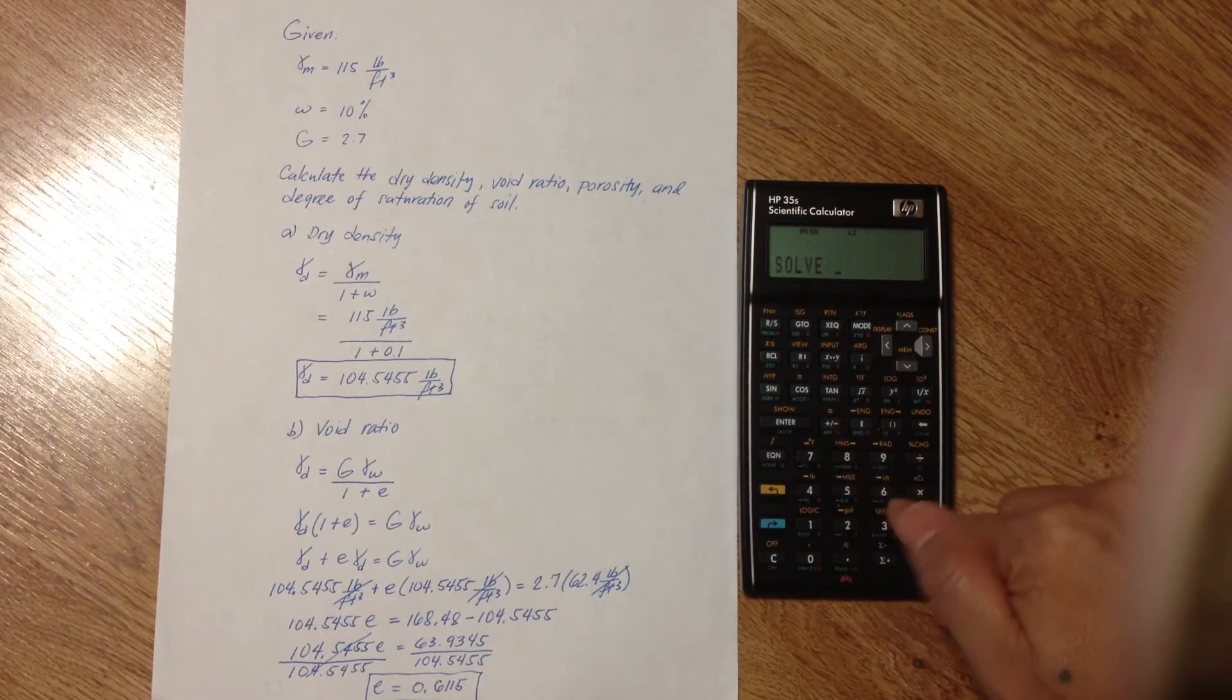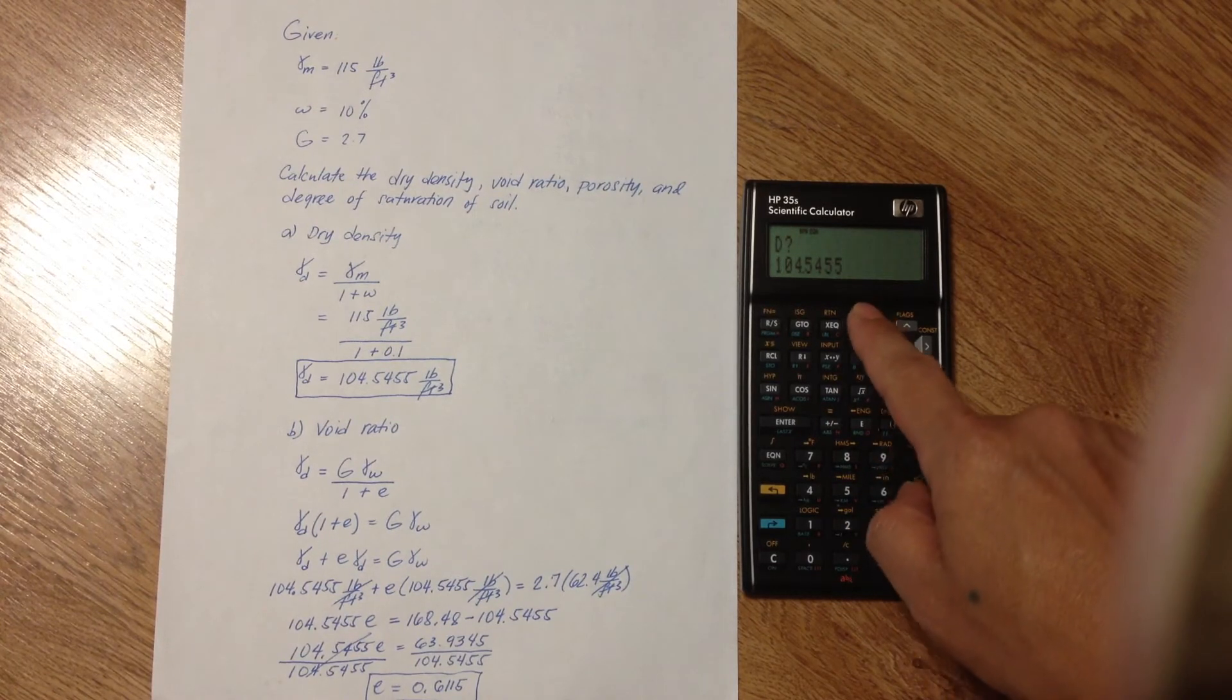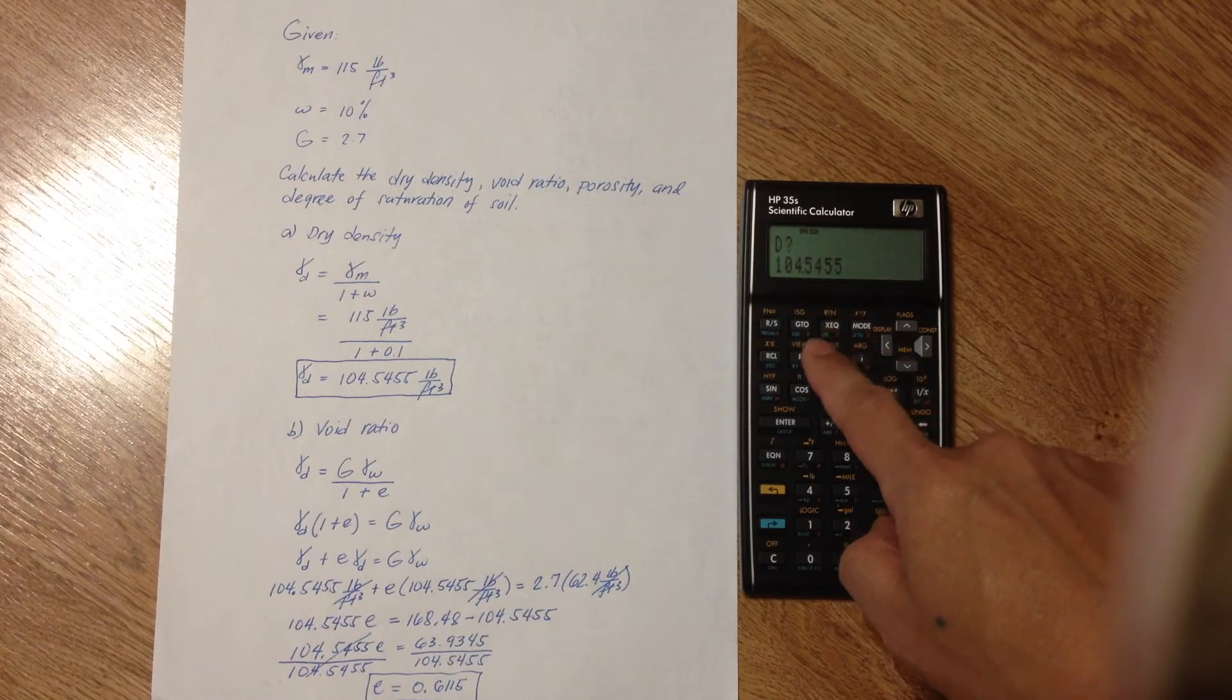And then, press V for void ratio. Now, the dry density is already there. Just press RS.